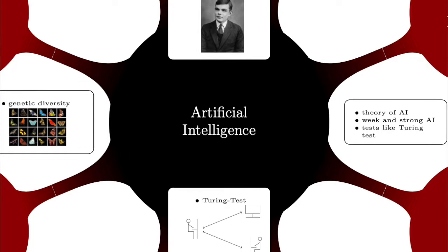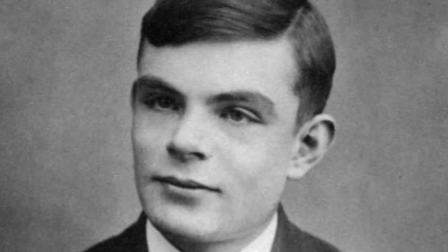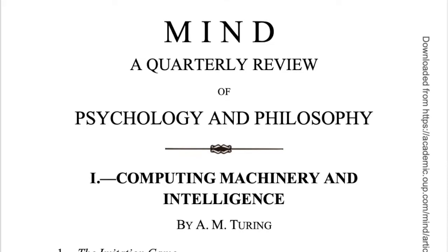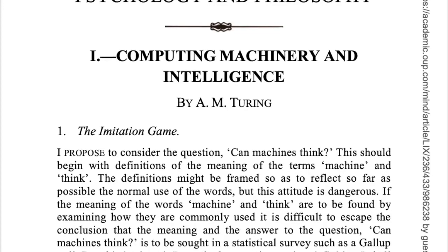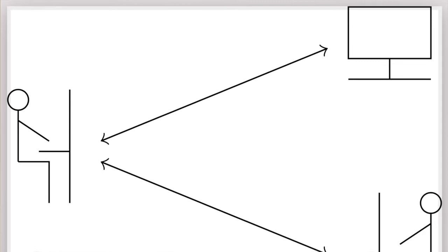The first ideas about AI go back to the beginning and the middle of the 20th century. One of the founding fathers of computer science, Alan Turing, published a paper in 1950 with the title 'Computing Machinery and Intelligence.' In this paper he addresses the question of whether a machine can think like a human. He suggests a test to determine AI.